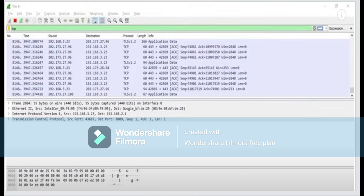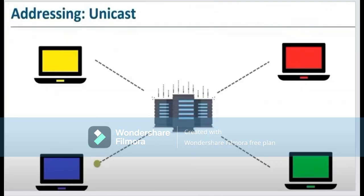A lot of YouTube accounts covering ethical hacking have been pulled down simply because they went against the rules and regulations, so we do not want to do that. Enroll in our classes to learn more. Now regarding unicast addressing — this is a data center with a network connected to it, and once you assign an IP address to these computers they are on the same network, and that is what they call addressing.